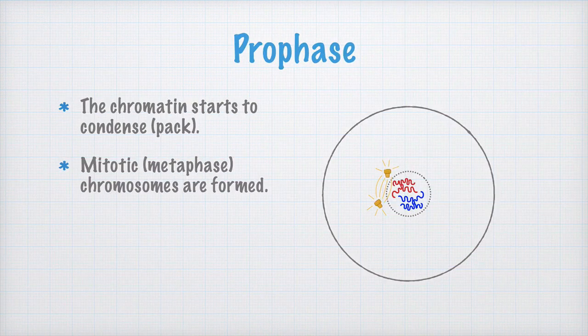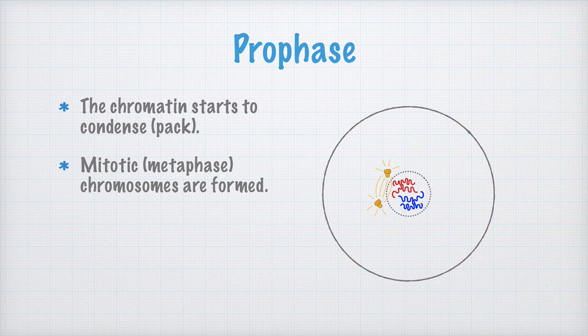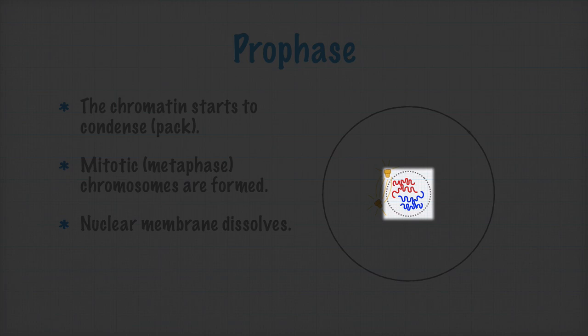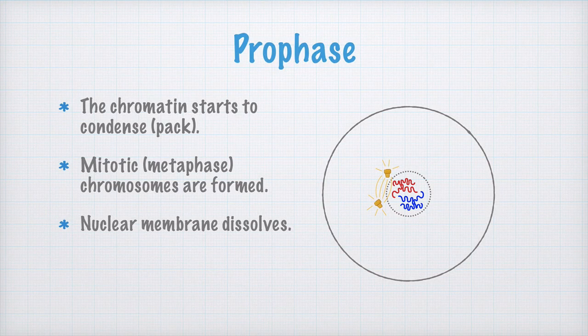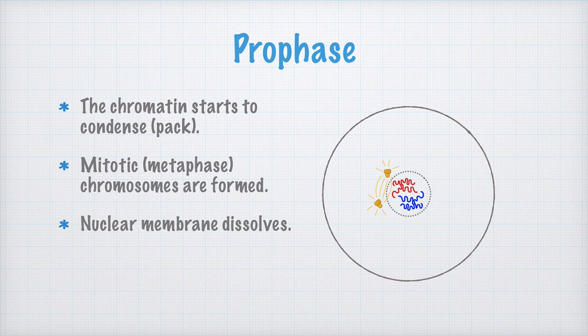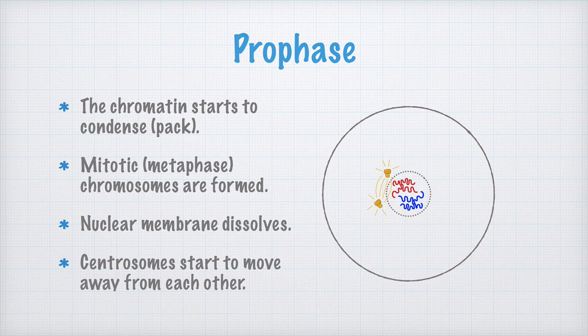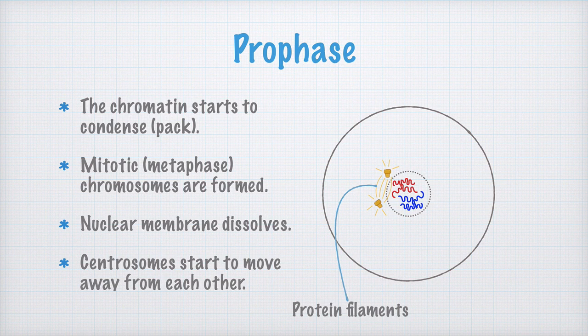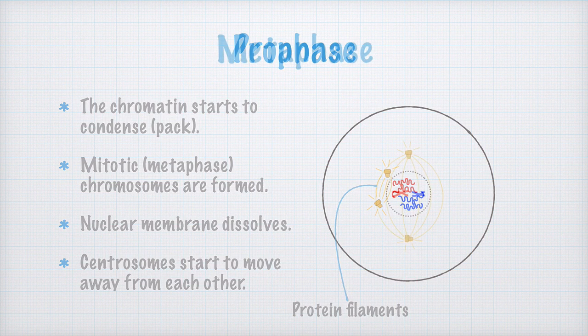Now let's return to the prophase. The chromatin is condensing, but also the nuclear membrane dissolves, which I show by drawing it with a dotted line. This is what signifies the prophase. Also, the centrosomes start to move away from each other. The yellow lines here between the two centrosomes are protein filaments, which physically push the centrosomes from each other, so they end up in different ends or poles of the cell. Eventually, they end up on different sides of the mitotic chromosomes.